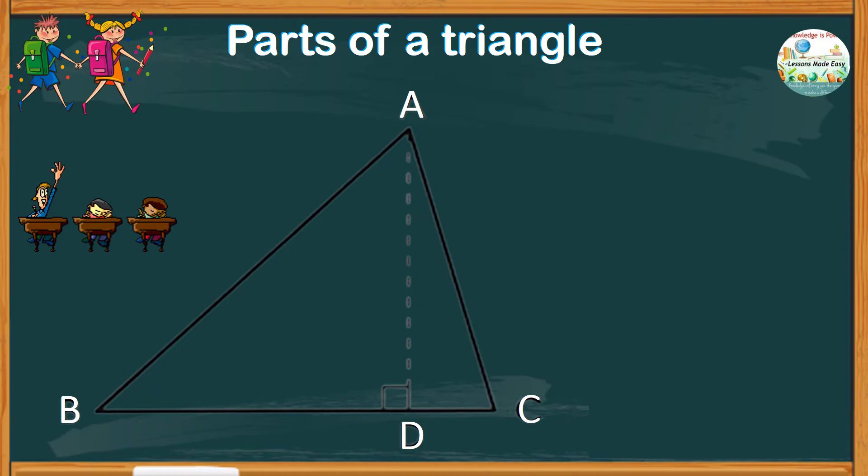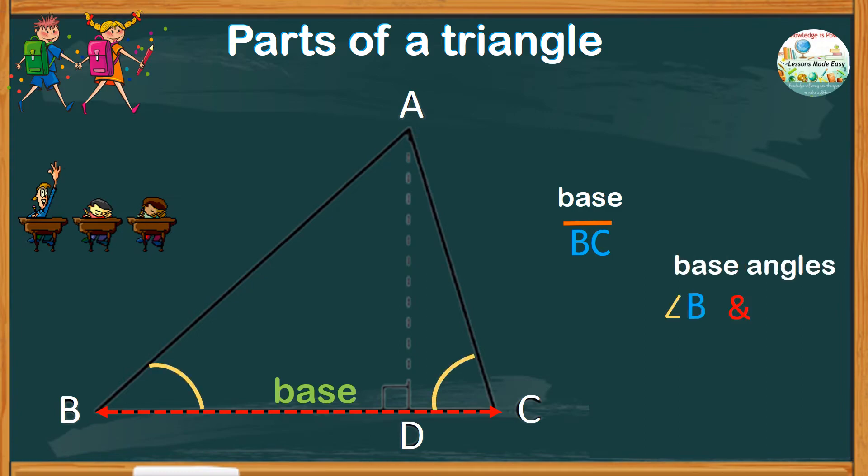Let's say for instance, line segment BC is the base. Then our base angles are angle B and angle C.